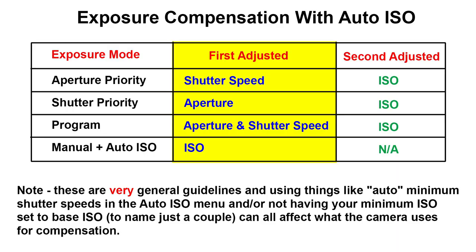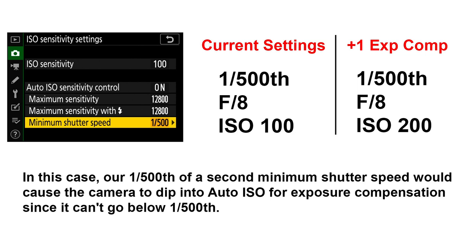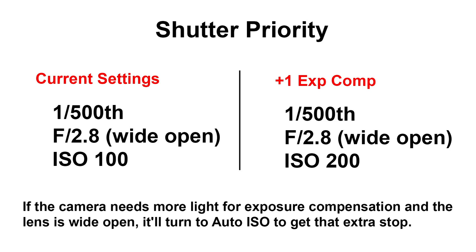While I can't speak for every camera, most will first try to take compensation from the primary exposure control they are allowed to adjust — aperture or shutter speed depending on the mode. If that's not enough, the camera will turn to ISO. One example is if the exposure compensation you dial in would require the camera to drop the shutter speed below the minimum shutter speed set in the auto ISO menu when you're in aperture priority or program. For shutter priority, it'll turn to ISO if the lens is wide open and it still needs more brightness. If the camera is already dipping into auto ISO and you use exposure compensation, it's a good bet that compensation will come from ISO.